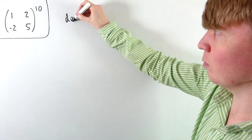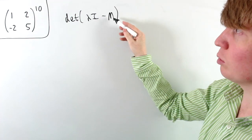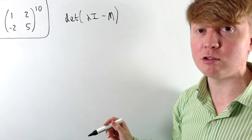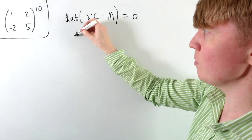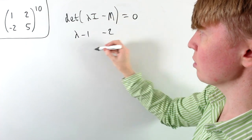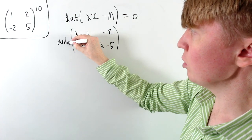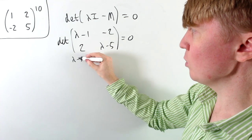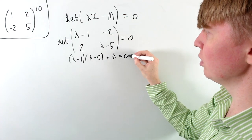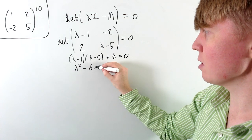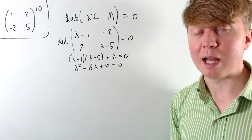Normally we would find the eigenvalues by setting the determinant of lambda times the identity matrix minus our original matrix — we can call this the 1, 2, -2, 5 matrix M — equal to 0. Doing lambda times the identity minus this matrix, we'd have lambda minus 1, minus 2, positive 2, and lambda minus 5. Setting the determinant equal to 0 gives us (lambda minus 1)(lambda minus 5) plus 4 equals 0, which expands to lambda squared minus 6 lambda plus 9 equals 0, giving a repeated eigenvalue of lambda equals 3.